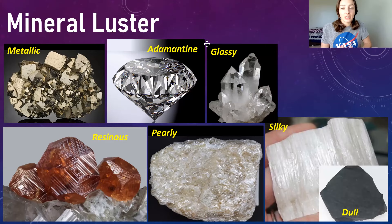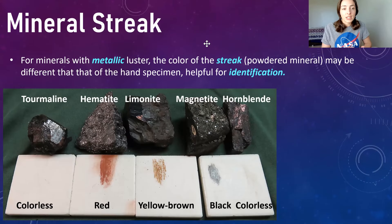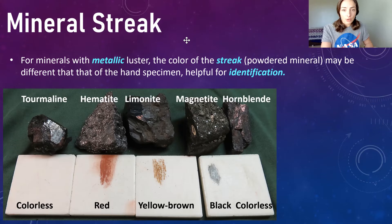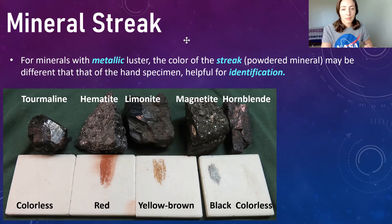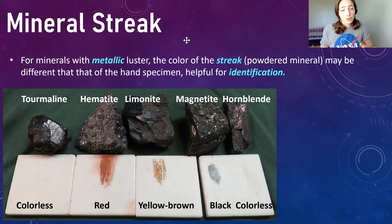Moving on to mineral streak: for many metallic minerals, the color of the streak — the powdered form of the mineral — may be different than that of the hand specimen, and therefore helpful for identification. Streaks are taken by scraping the mineral along a porcelain plate and looking at the color that comes off. For example, tourmaline has a colorless streak, hematite a red streak, limonite a yellow-brown streak, magnetite a black streak, and hornblende another colorless streak.